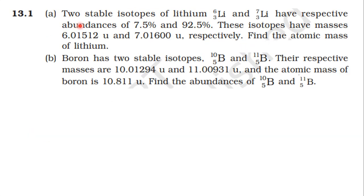First question problem: two stable isotopes of lithium, Li-6 and Li-7, have respectively abundance of 7.5% and 92.5%. These isotopes have masses 6.01512 atomic mass unit and 7.01600 atomic mass unit respectively. Find the atomic mass of lithium.